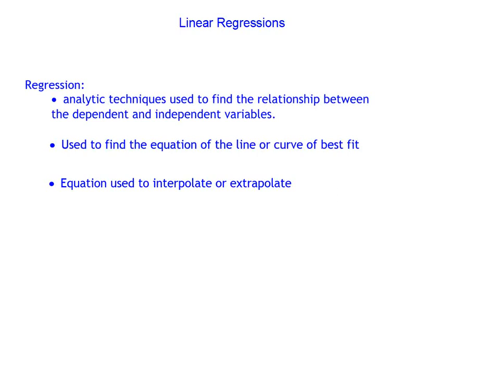In this video we look at linear regressions. Linear regressions, actually any regressions, are used to find a relationship between two variables. We're going to focus on linear regressions, which means the data will give a straight line. So if we plot one variable against the other — the dependent versus the independent — we should find that the data tends to be a straight line.